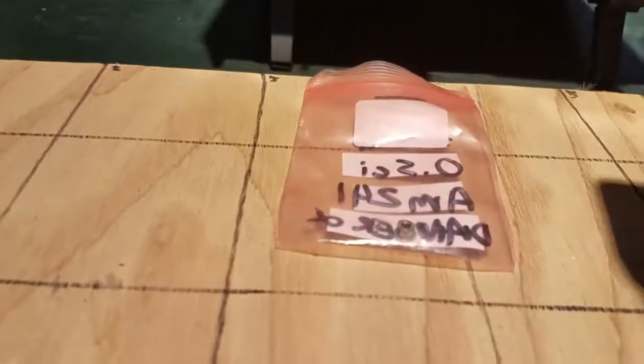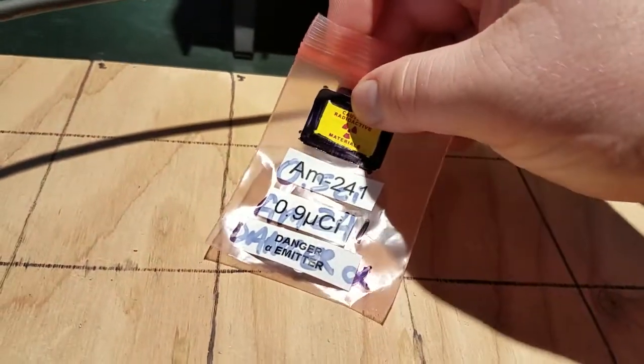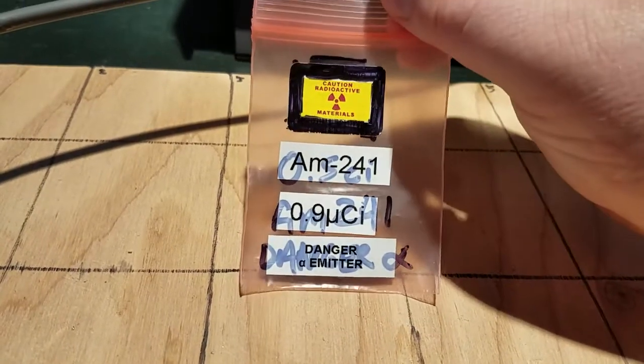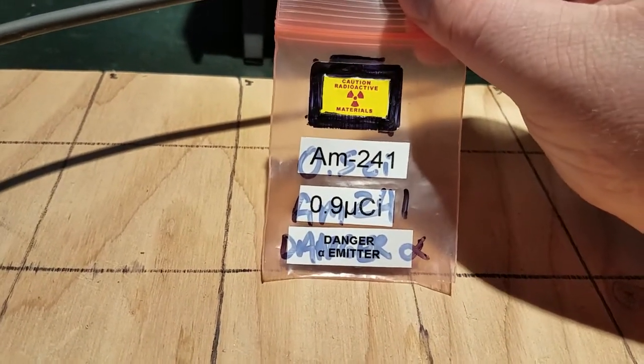And that's detecting the gammas coming off of the 0.9 microcuries of Am-241. And next I'll bring out a World War II era radium compass and measure that.